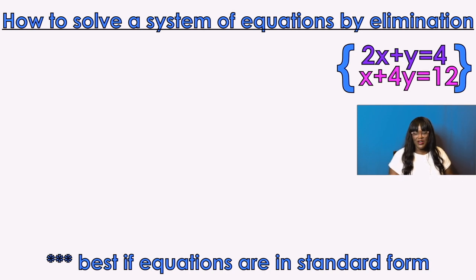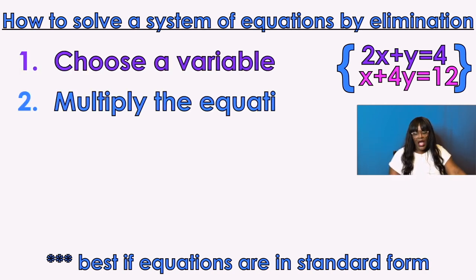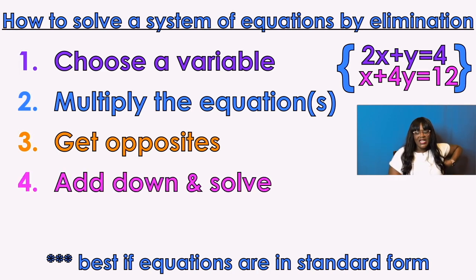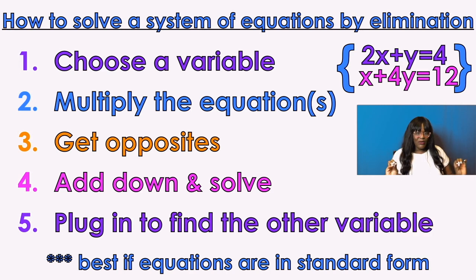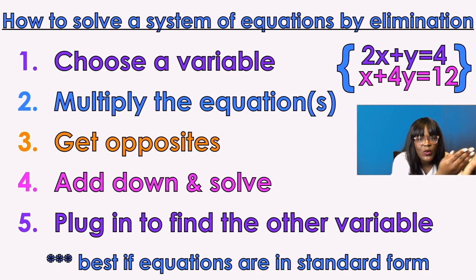How to solve a system of equations by elimination: step one, choose a variable. Step two, multiply the equations — sometimes just one equation, sometimes both. Step three, get opposites — opposites are negative two and positive two, not negative one and positive three; they have to be the same number. Step four, add down and solve. Step five, plug in that one answer to find the second, because your answer has to be an ordered pair. Best if equations are in standard form: ax + by = c.